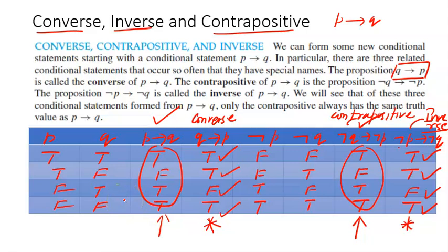To conclude: we covered the conditional statement, its truth table, and the converse, inverse, and contrapositive. A statement p implies q is equivalent to its contrapositive, and the converse and inverse of the statement are equivalent to each other. We will take some examples and proceed further in the next class. Thank you — that is all for this video.